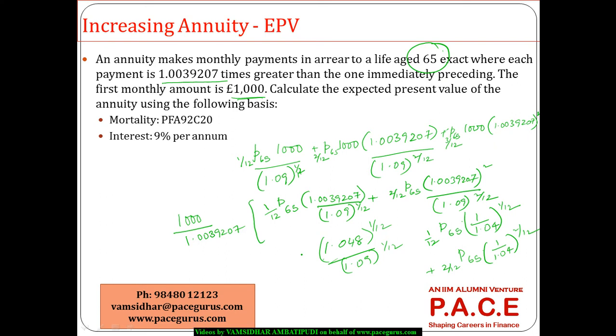It is simply giving us the logic that this is a monthly basis. Overall 1,000, so probably if I express it now, this becomes 12 times 1,000. So 12,000 by 1.0039207. And this is purely, I can now take it as A65 on a monthly payment kind of a basis. And at 4%, I can very well take it.